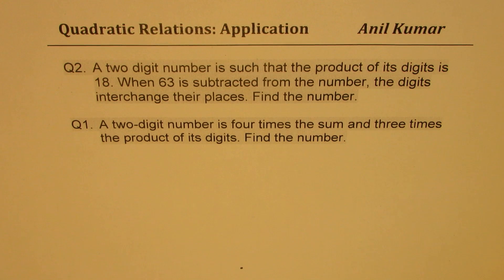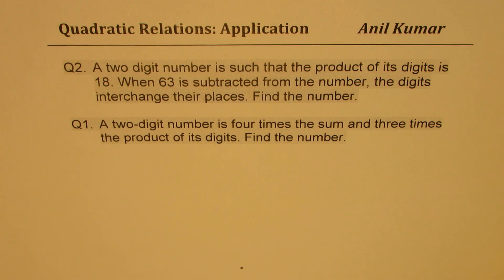You will see that I have flipped the question numbers. We'll talk about question number two first. Question number two: a two-digit number is such that the product of its digits is 18. When 63 is subtracted from the number, the digits interchange their place. Question number one: a two-digit number is four times the sum and three times the product of its digits. Find the number.